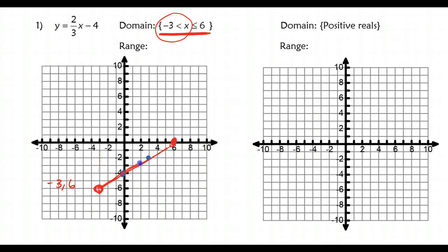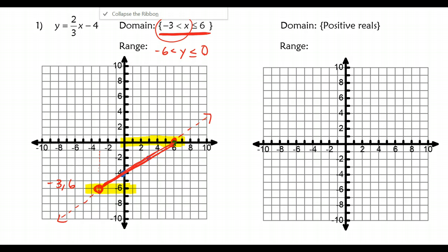This is the only portion of this graph that I want to show. You can extend this with a dotted line to show it's going on forever, but this is the only portion I want. Now when we talk about the range, the lowest y value is at y equals negative 6 — that's the low point. Then the high point gives us a range of negative 6 less than y, less than or equal to 0. The highest point of this y value is at y equals 0.